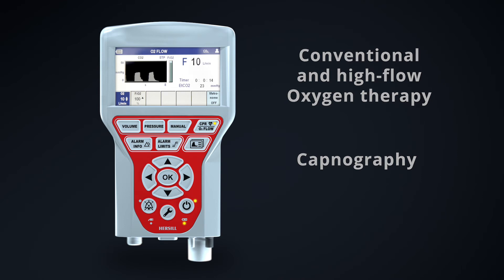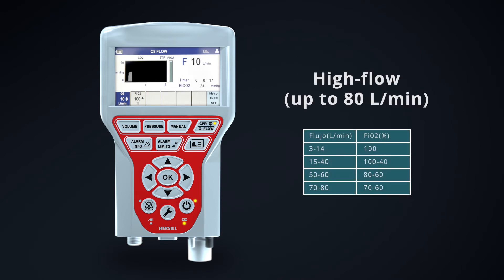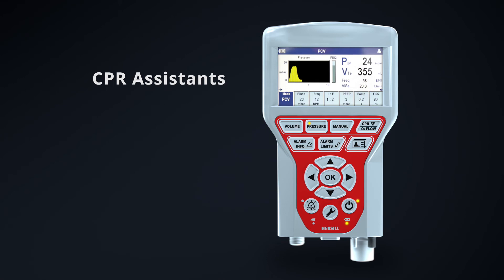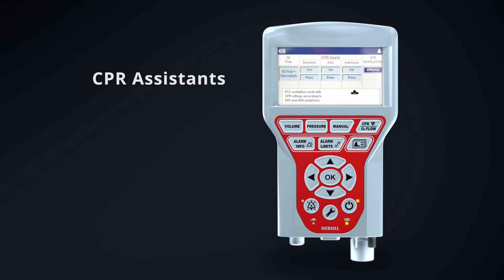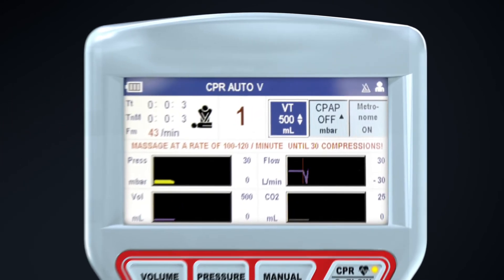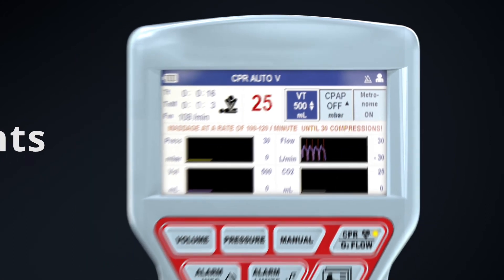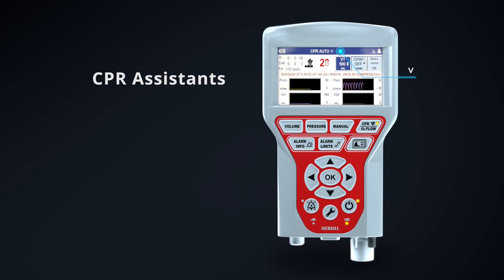We can also administer high flow oxygen therapy. We have several assistants to help during CPR. For instance, in auto mode, the metronome will count 30 chest compressions and the rescuer will then stop compressing. The ventilator will send two cycles in a row, in this case controlled by volume.